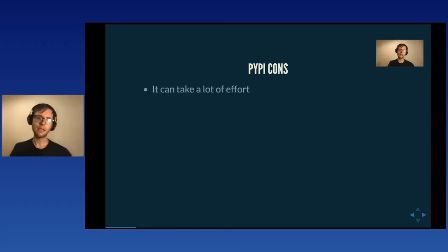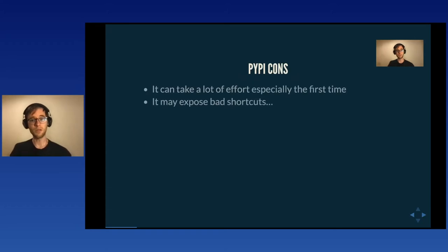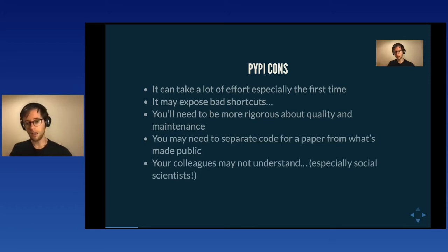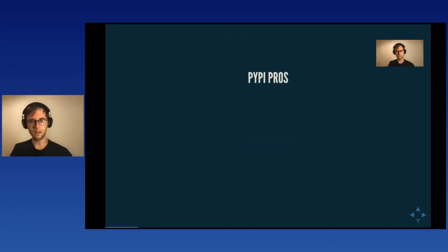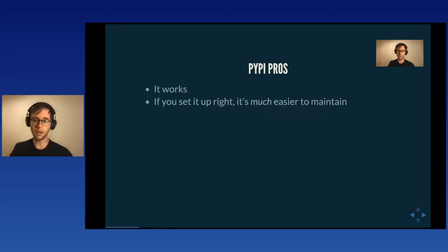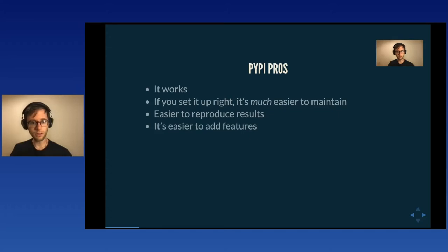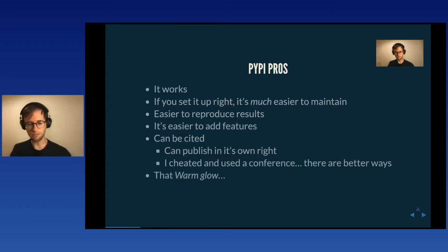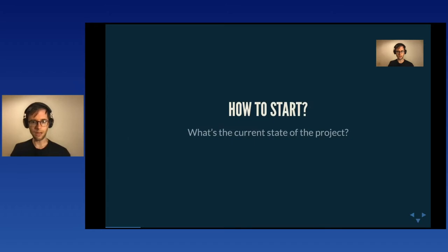Cons of taking it to PyPI: it takes a huge amount of effort, especially the first time. It may expose bad shortcuts you had early in the project. You may need to be more rigorous about quality and maintenance. You might need to separate code from a paper that's under review, and your colleagues may not initially understand — maybe in the social sciences this is more of an issue. But the advantage is it can be much easier to maintain, reproduce results, add features to, and it's more directly citable, perhaps in its own right or attached to a paper.